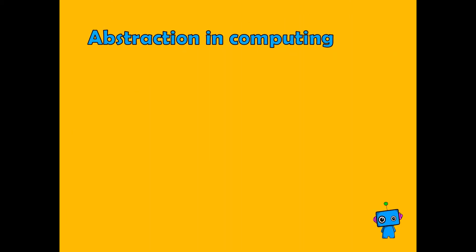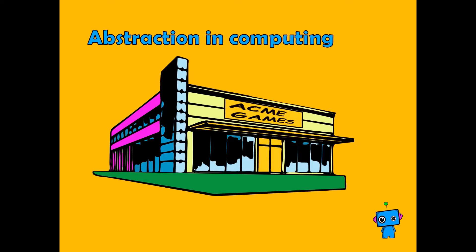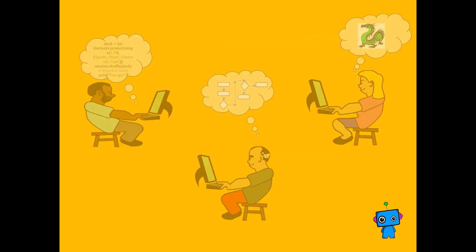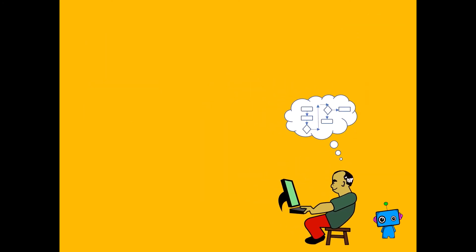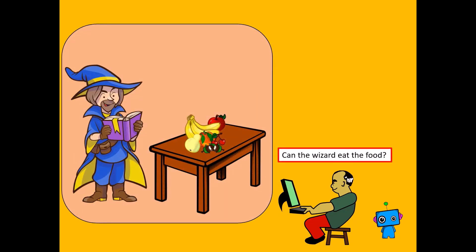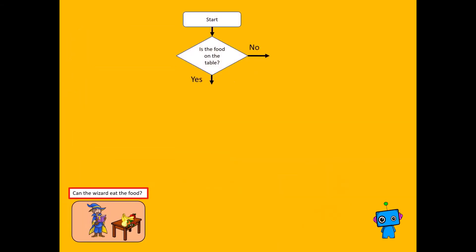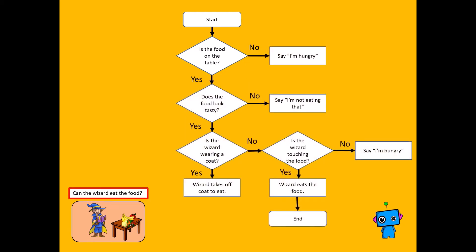How does this apply to computing? Back in the game company, we've got different coders who are all preparing different parts of the game. This coder's job is to test one particular element — he needs to check whether the wizard can eat the food on the table. He starts by making a flowchart, which is a good start, but then he puts lots of other things in. We do need to know if the food is on the table, but it doesn't really matter if the wizard says he's hungry, or if the food looks tasty, or if the wizard is wearing a coat.